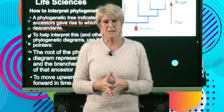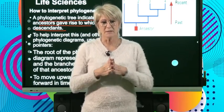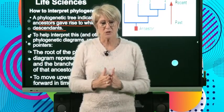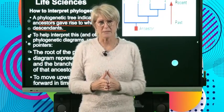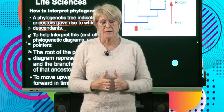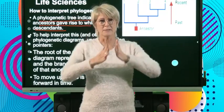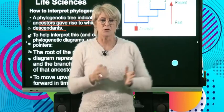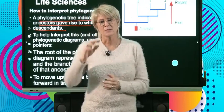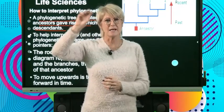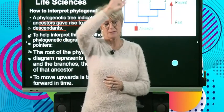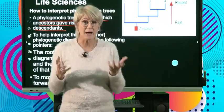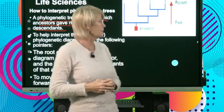A phylogenetic tree is like a tree: we start at the bottom, usually at the base, at the roots, and then we move up the stem, and as it branches off, speciation occurs and we end up with different species, and we end up with the biodiversity that we know today.